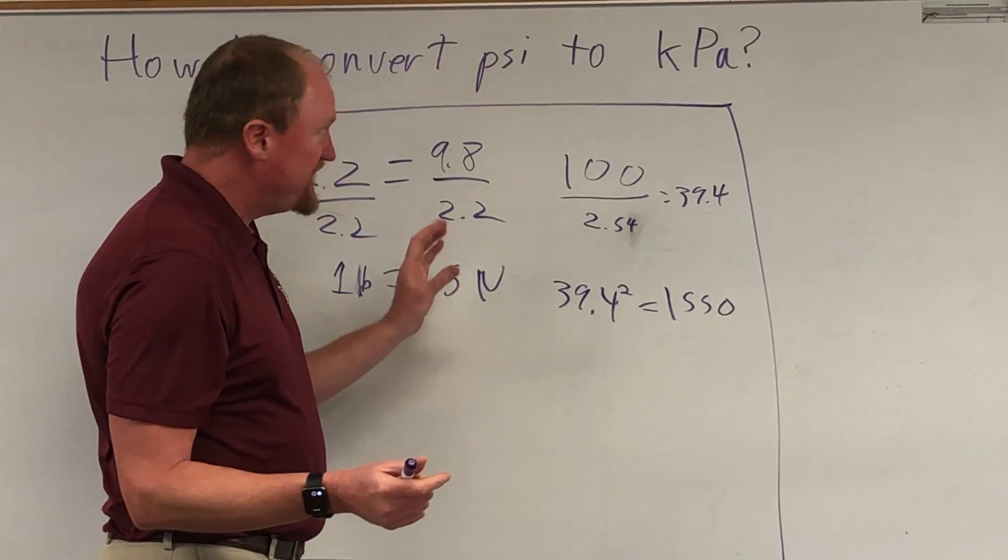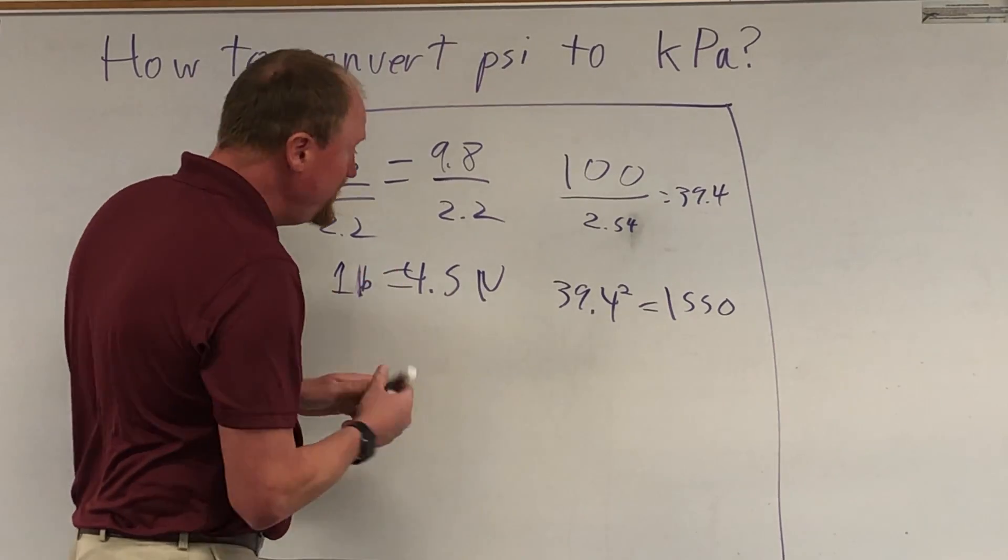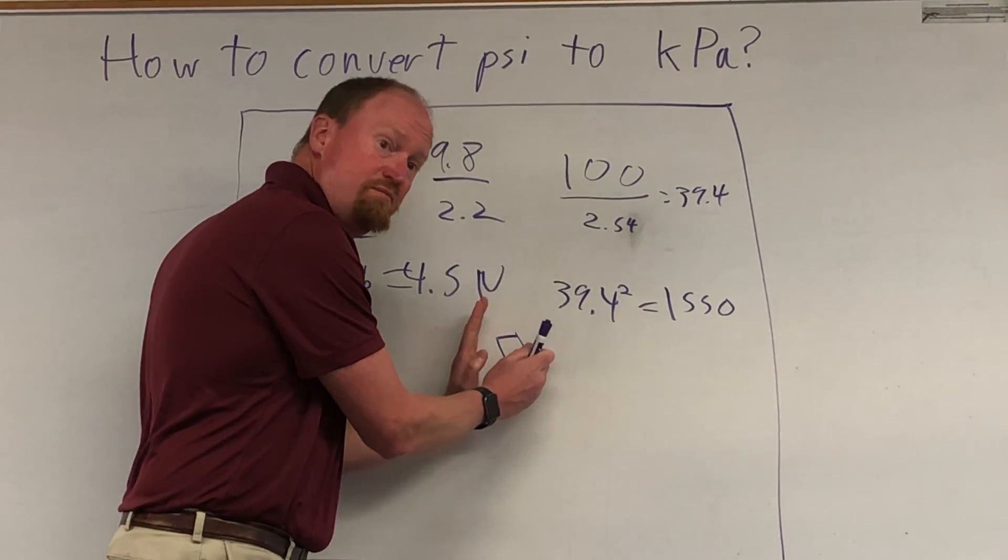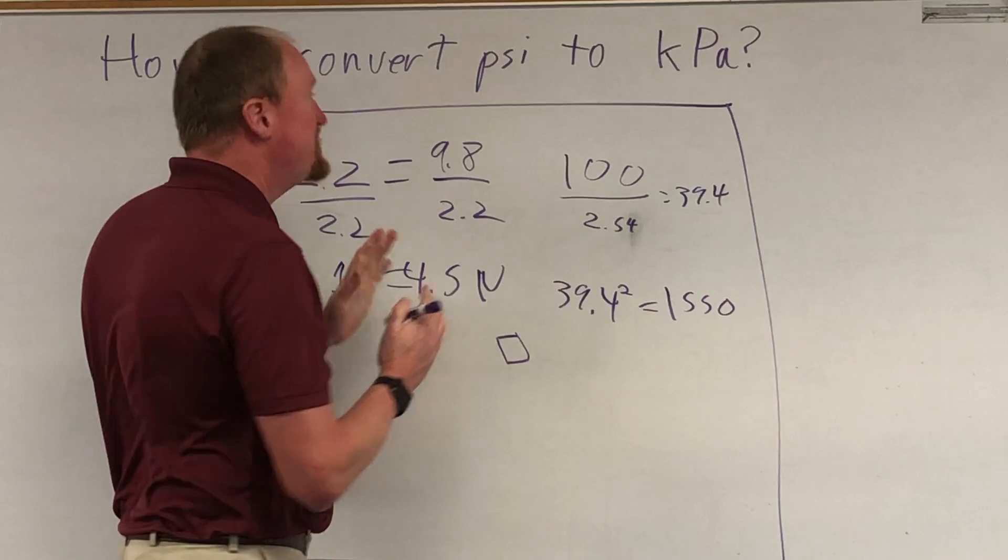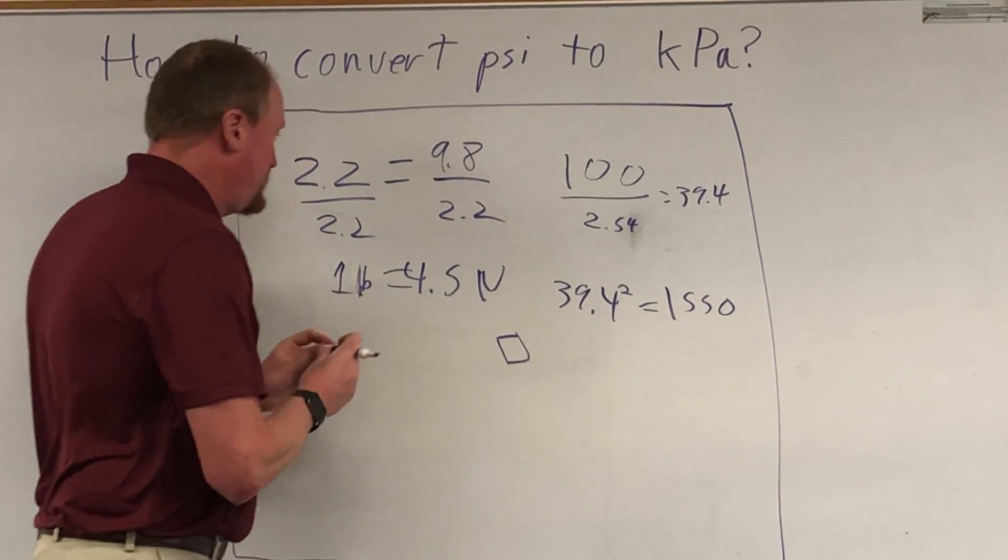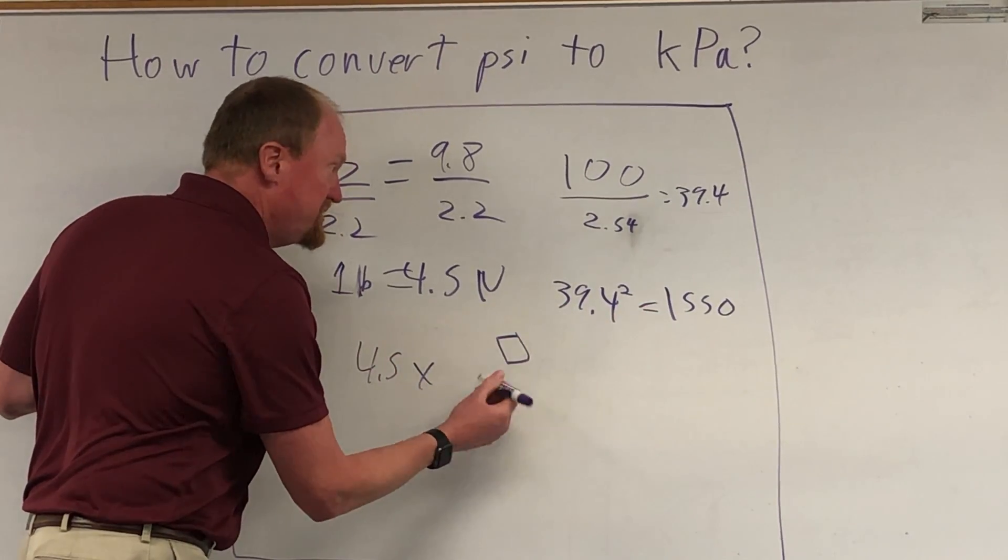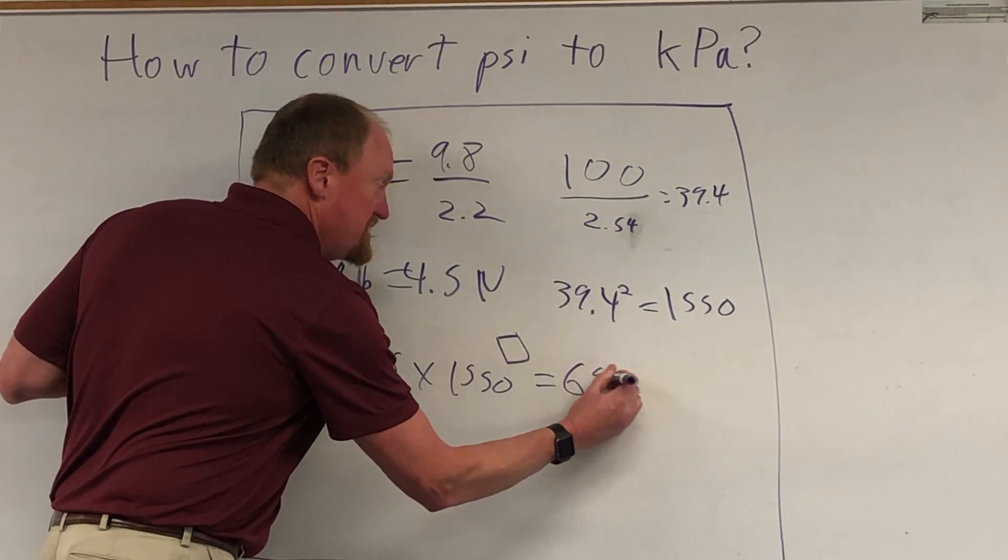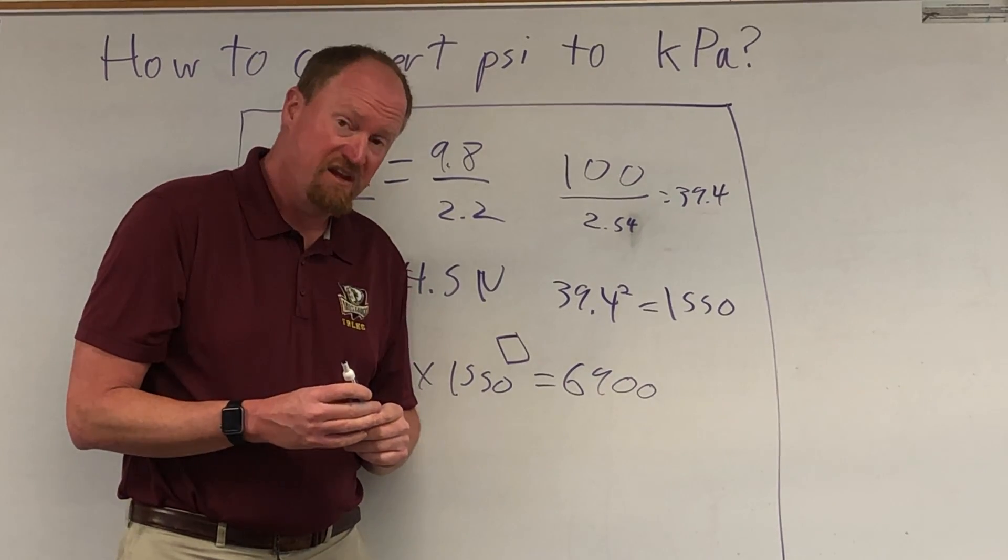Now that means that a pound is 4.5 times more than a newton. It also means that the area is 1,550 times more concentrated. Remember, part of what makes a pascal so weak is not just that a newton is smaller than a pound, it's also that that force is spread out over a much bigger area. So the pound is 4.5 times more. The area is roughly 1,550 times more. And what you get is roughly 6,900. So there's 6,900 pascals in one psi of pressure.